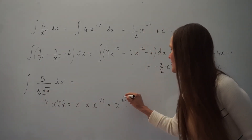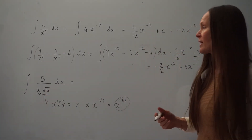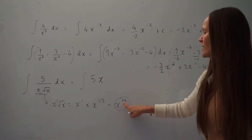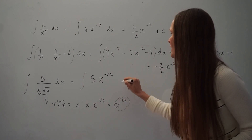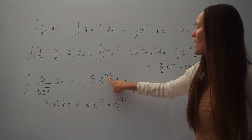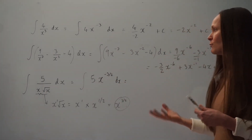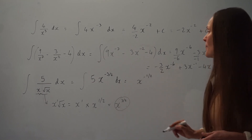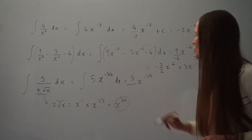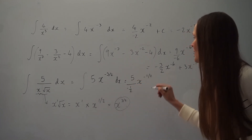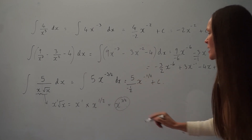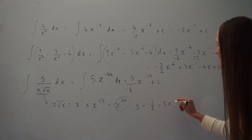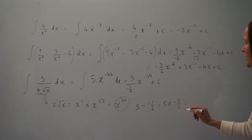That is the same as the denominator, so rewriting in power form gives the integral of 5x raised to the power of negative 3 over 2. Adding 1 to this power: negative 3 over 2 is like negative 1 and a half, so negative 1 and a half plus 1 is negative 1 half, giving x to the negative 1 half. We're dividing 5 by the new power, negative 1 half. That is the same as 5 multiplied by negative 2 over 1, which equals negative 10.